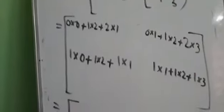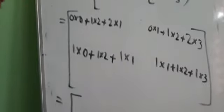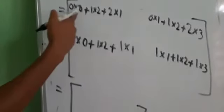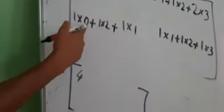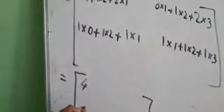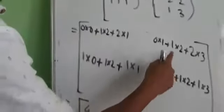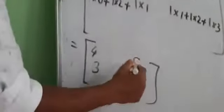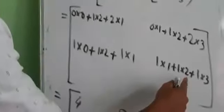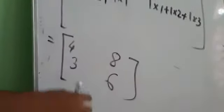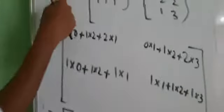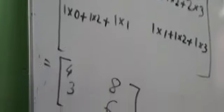After calculating: 0 plus 2 plus 2 equals 4; 0 plus 2 plus 3 equals 8 — wait, 0 plus 2 plus 6 equals 8; 1 plus 2 plus 3 equals 6. So A cross B will be this result. Thank you.